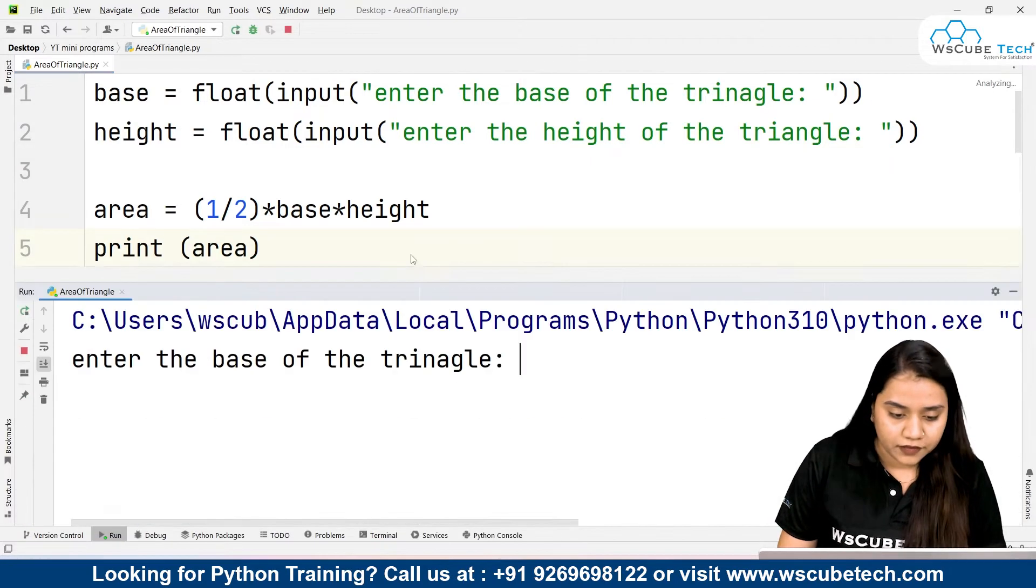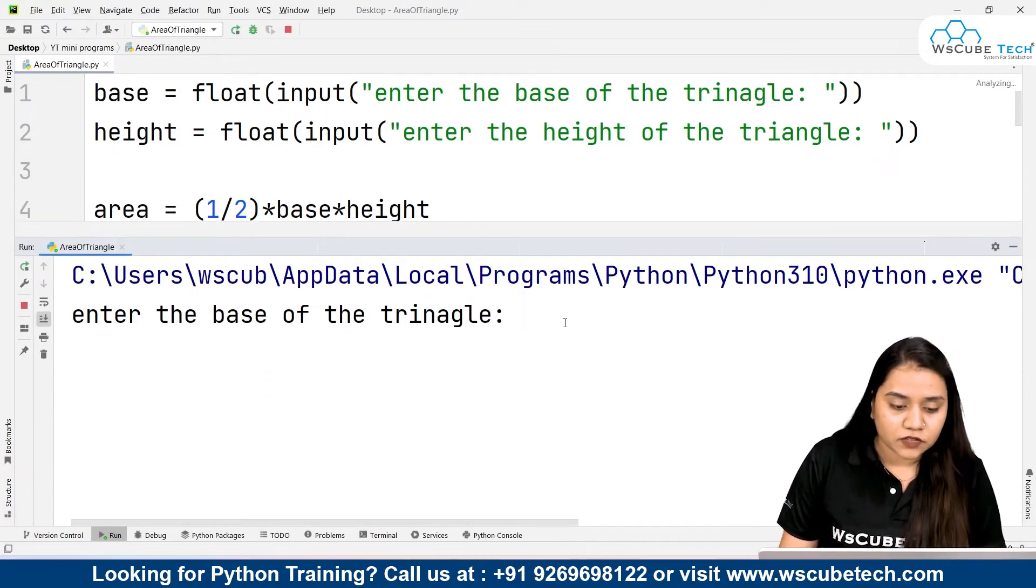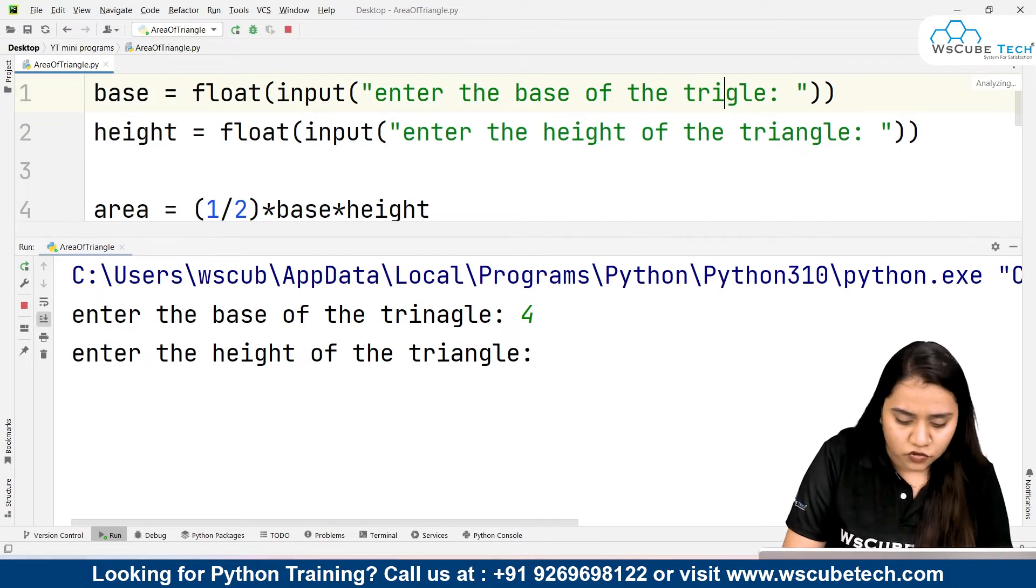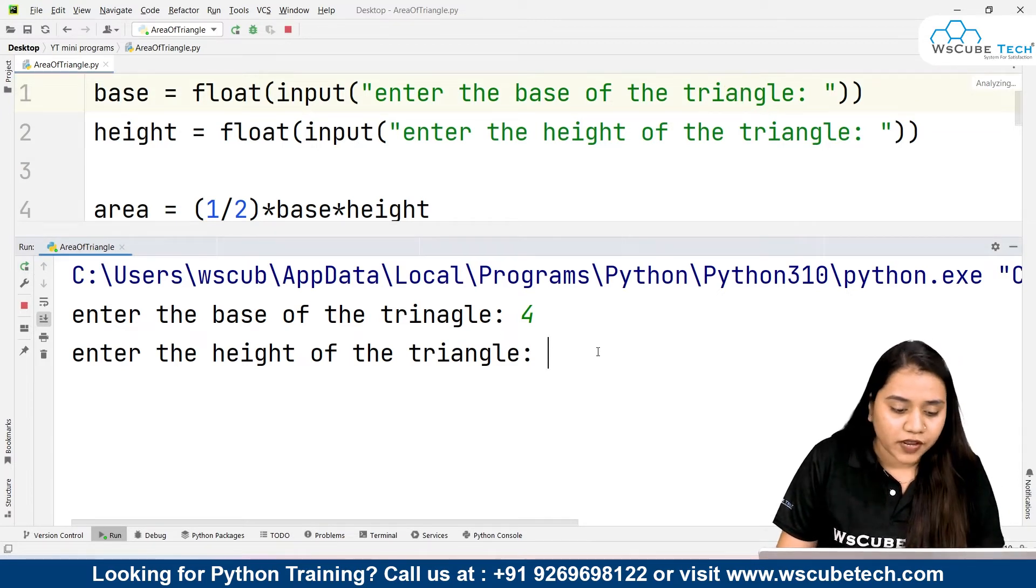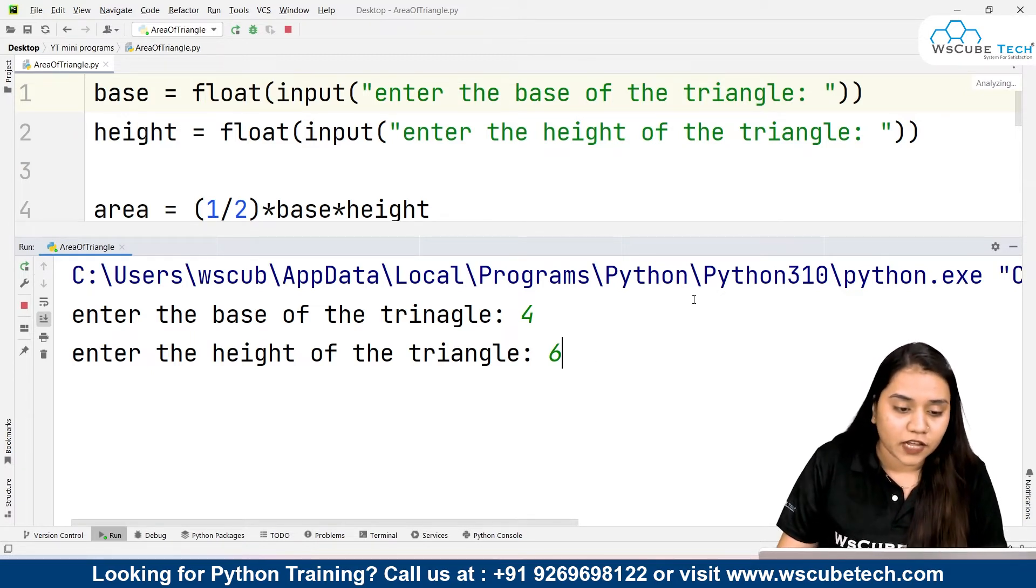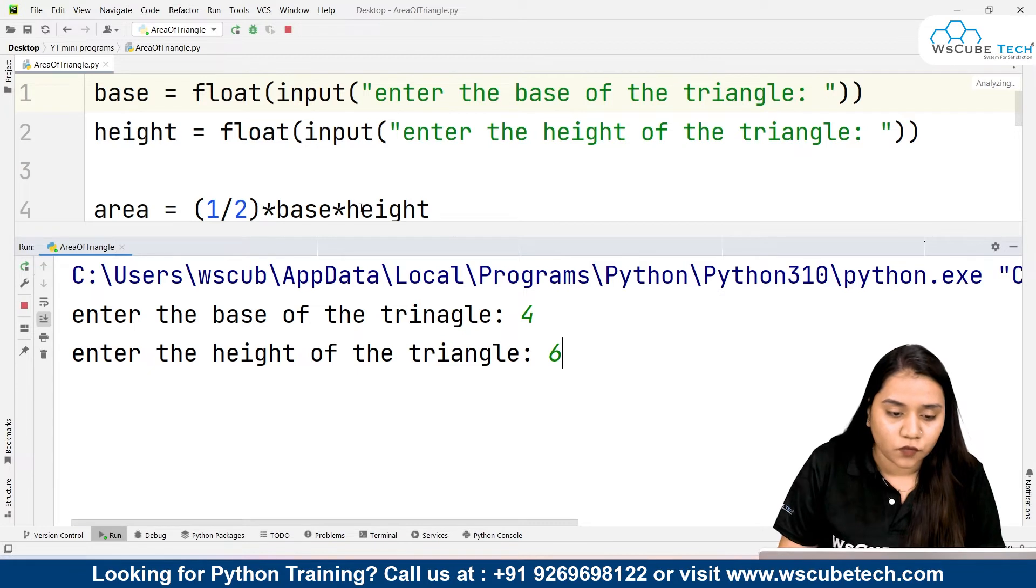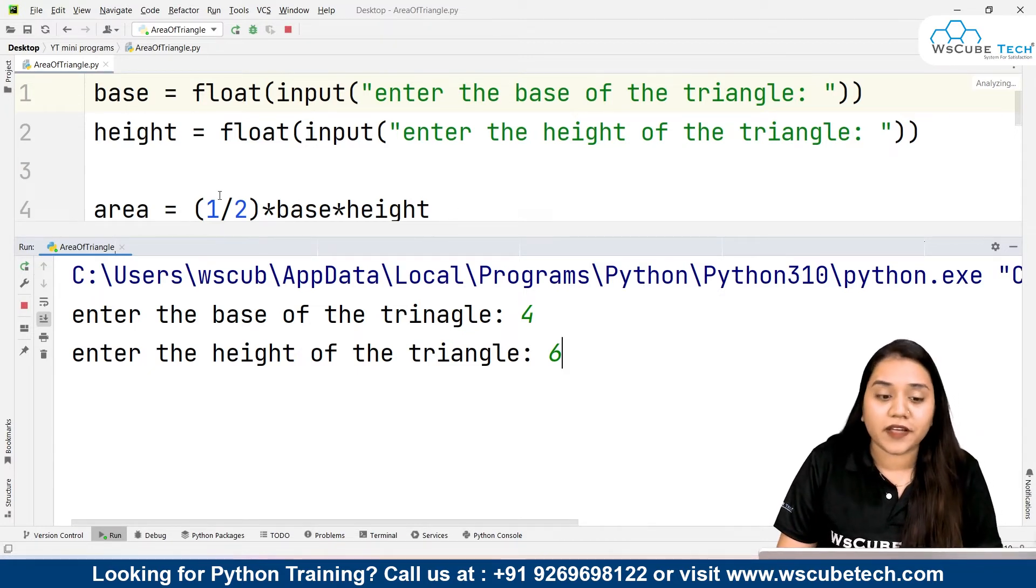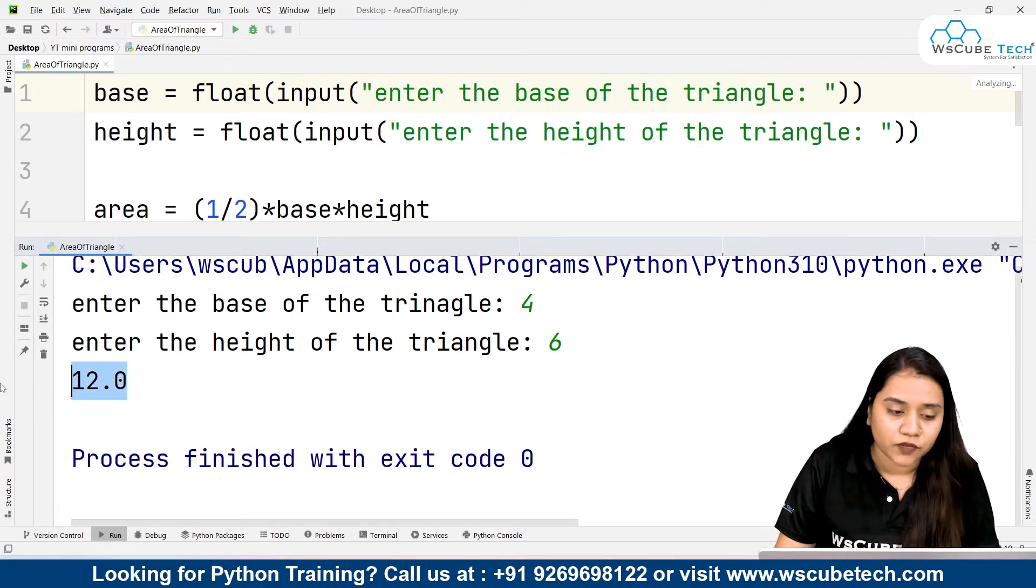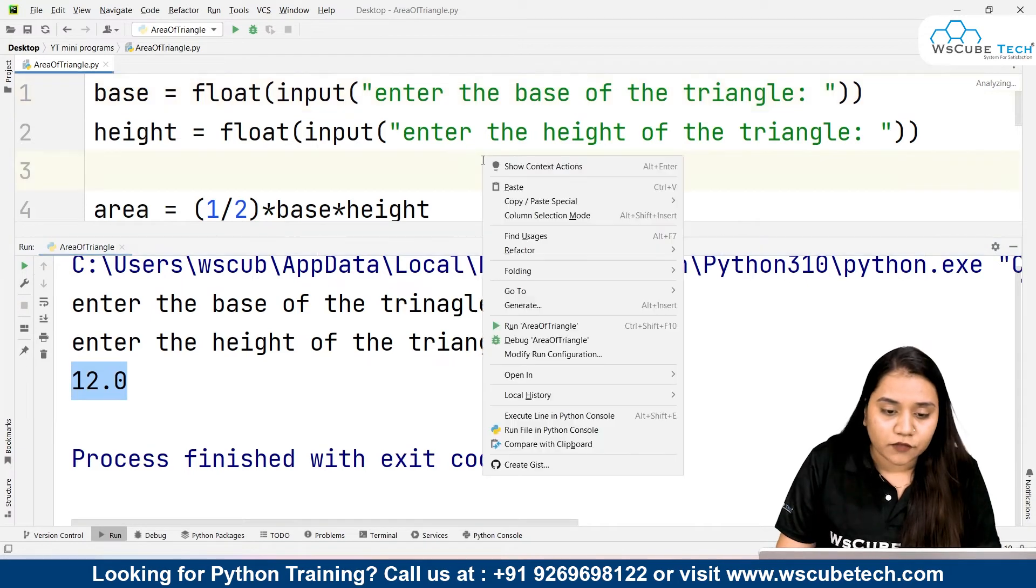It will ask me to enter the base of the triangle, so I'll be writing 4. The spelling of triangle is not correct, so it should be triangle. Enter the height of the triangle, let's say it's 6. So 6 times 4 is 24, 24 when divided by 2 is 12. That means half times base times height - base is 4, height is 6, multiplication is 24, when multiplied by half it gives us 12. If I press enter, the value is also 12, that means our program is working correctly.